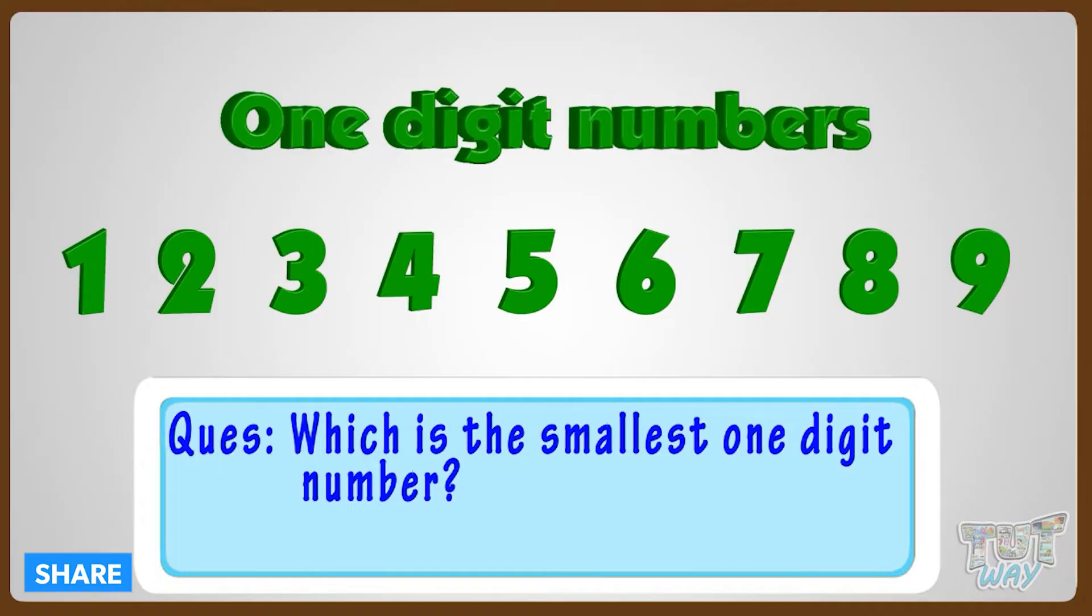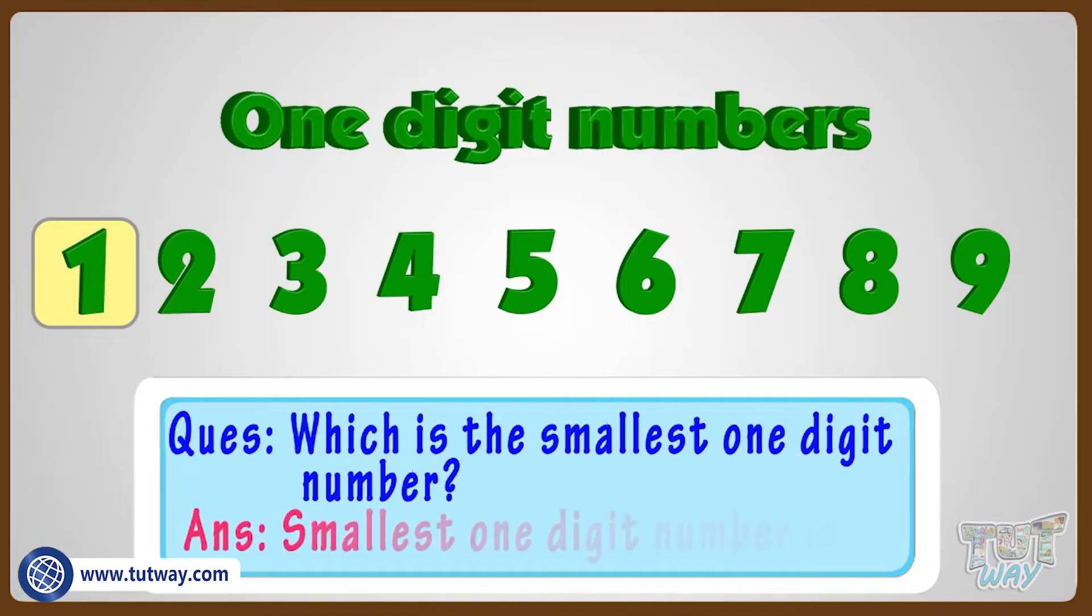One-digit numbers are 1 to 9. And the smallest number here is 1. So the smallest one-digit number is 1.